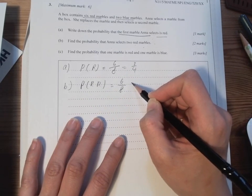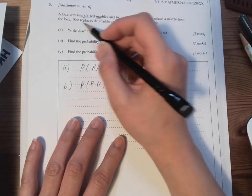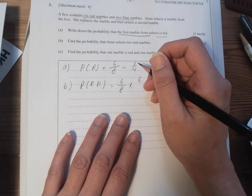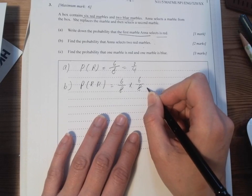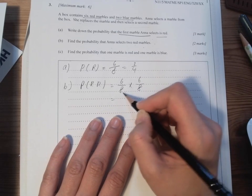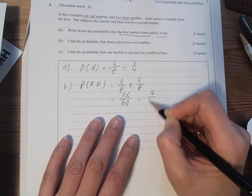So six over eight times six... sorry, we replace the marble and then select it, so we put it back in, so we have six over eight again, so multiply twice, and that we got 36 out of 64, and then we simplify, become 9 over 16.